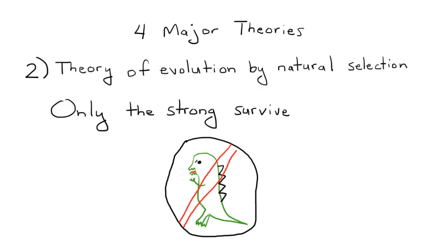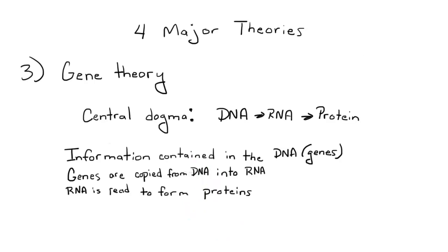The second theory is the theory of evolution by what's called natural selection. This just means only the strong survive. Only the strong reproduce and pass their genetic information on to future generations. The third theory is called the gene theory. It involves what is called the central dogma, which is DNA to RNA to proteins.